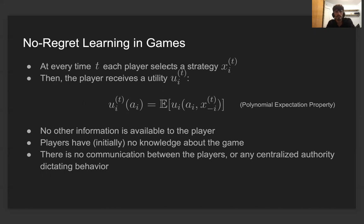From a complexity theoretic standpoint, we can efficiently simulate this oracle in virtually all known succinctly representable games. This is essentially the property that Papadimitriou and Roughgarden referred to as the polynomial expectation property. Let me point out that the results we're going to describe cannot be extended to the weaker bandit feedback model. Besides this feedback, there is no other information available to the player — results hold even if players have no knowledge about the game initially, there is no communication between players, and no centralized authority dictating behavior.